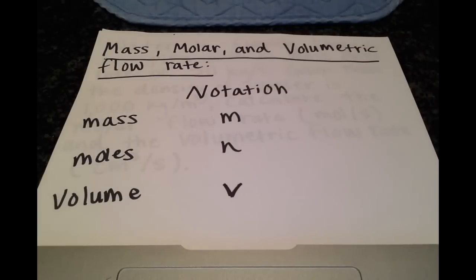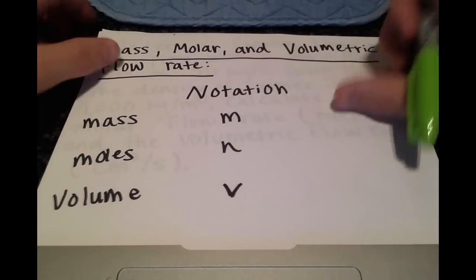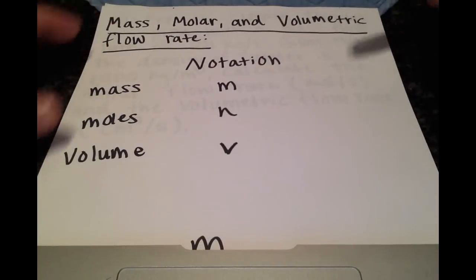Hello there. Today we're going to be talking about flow rates. So there's mass flow rate, molar flow rate, and volumetric flow rate. First I just want to introduce the notation of each of these. We know the notation for mass, moles, and volume.